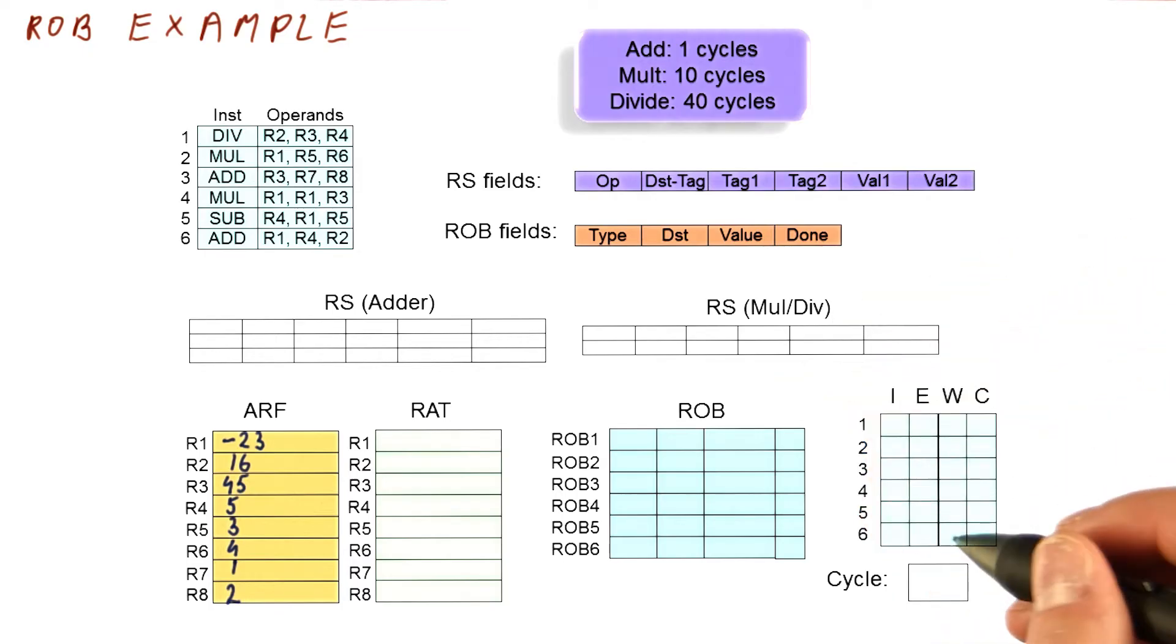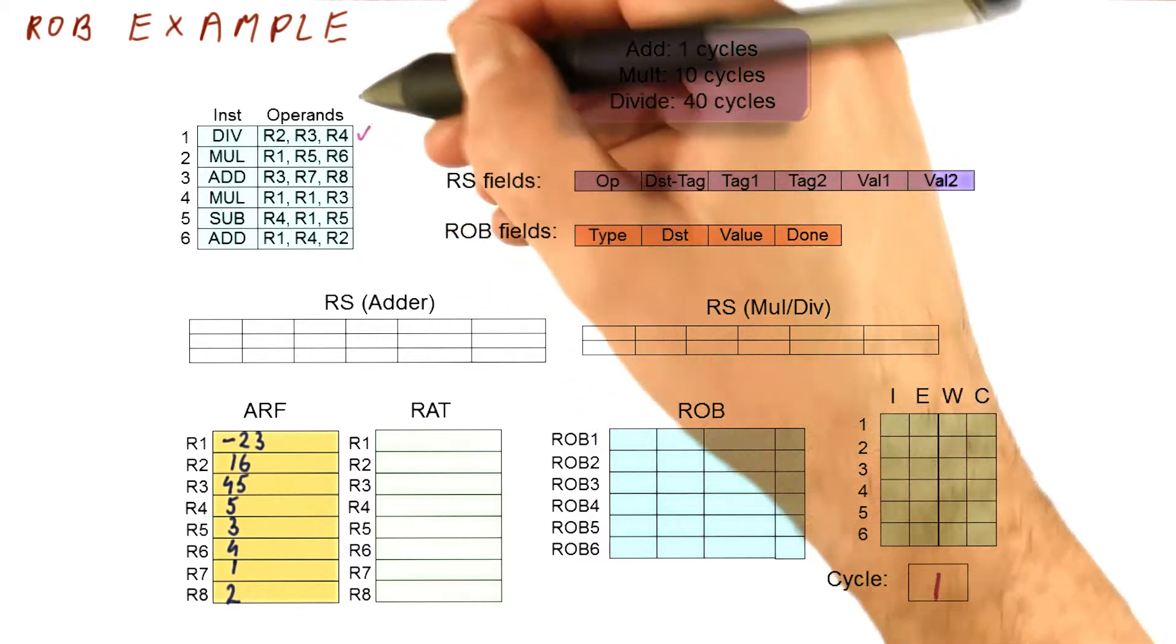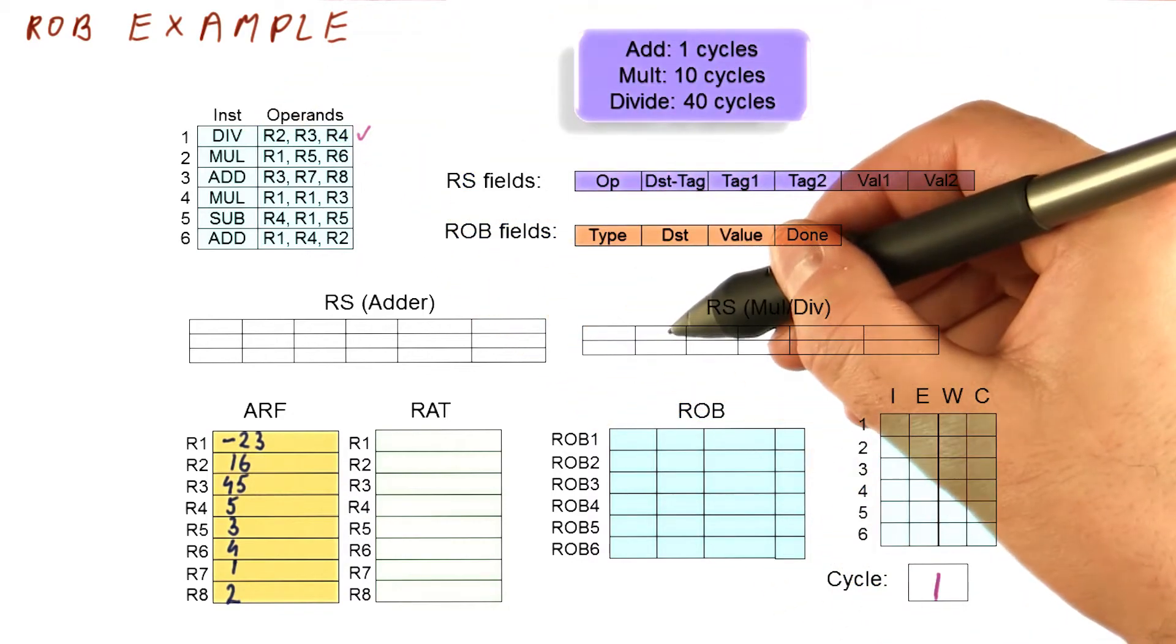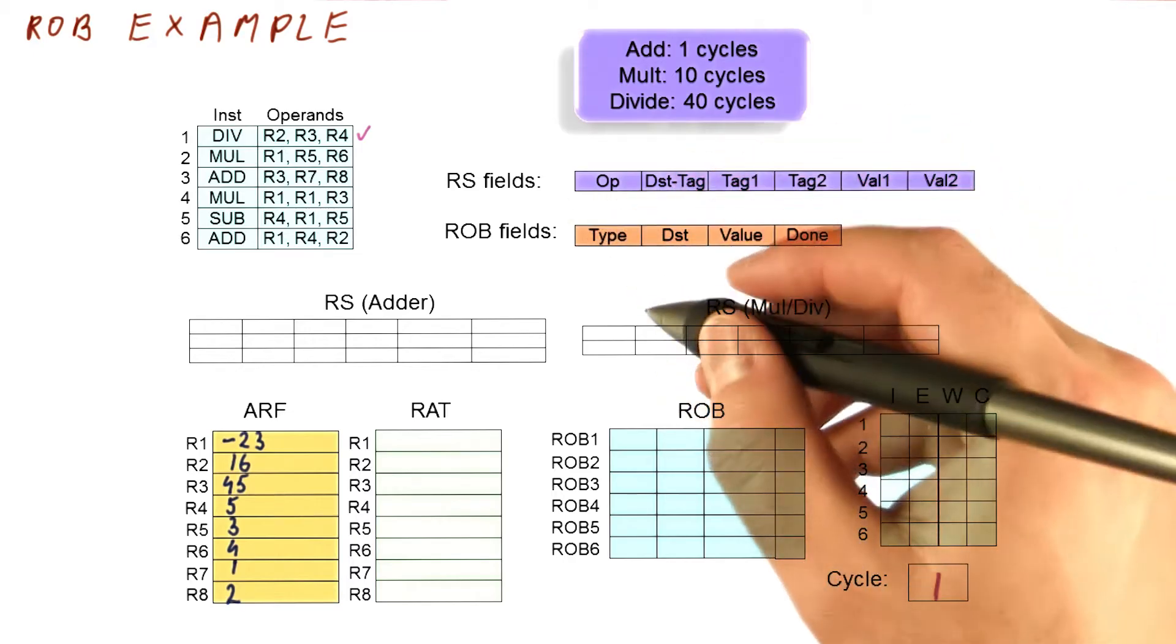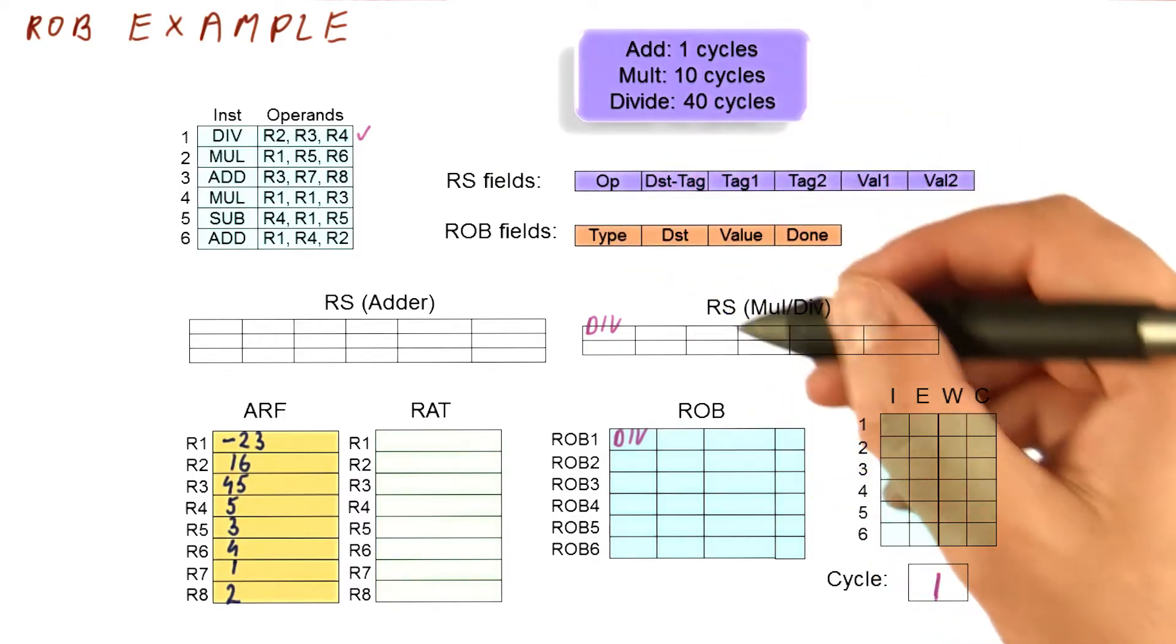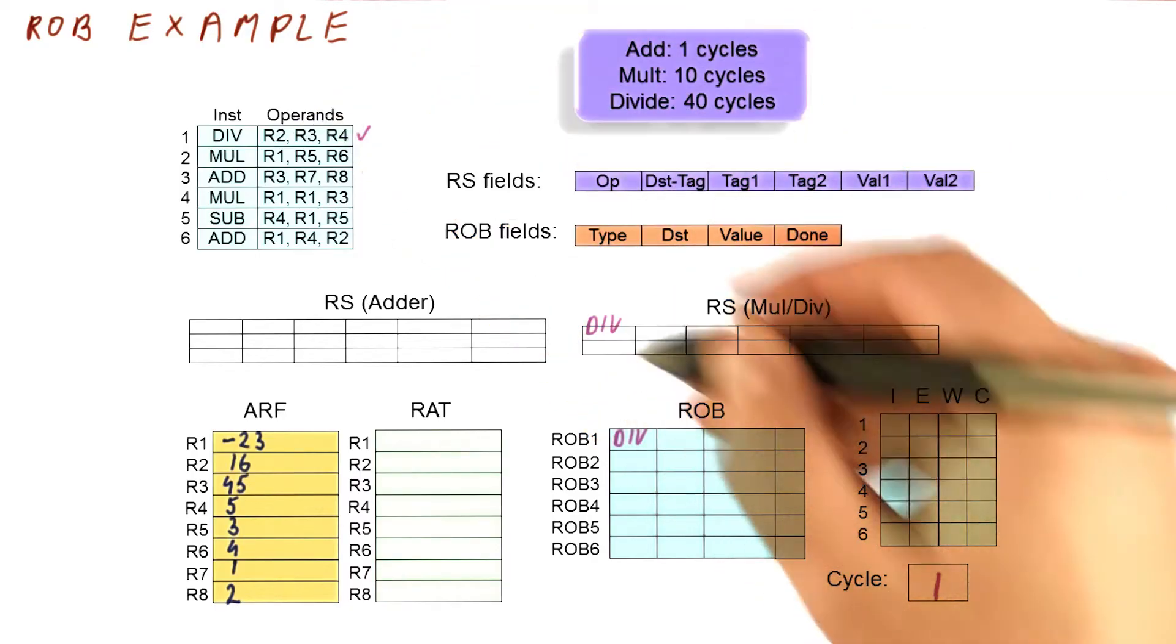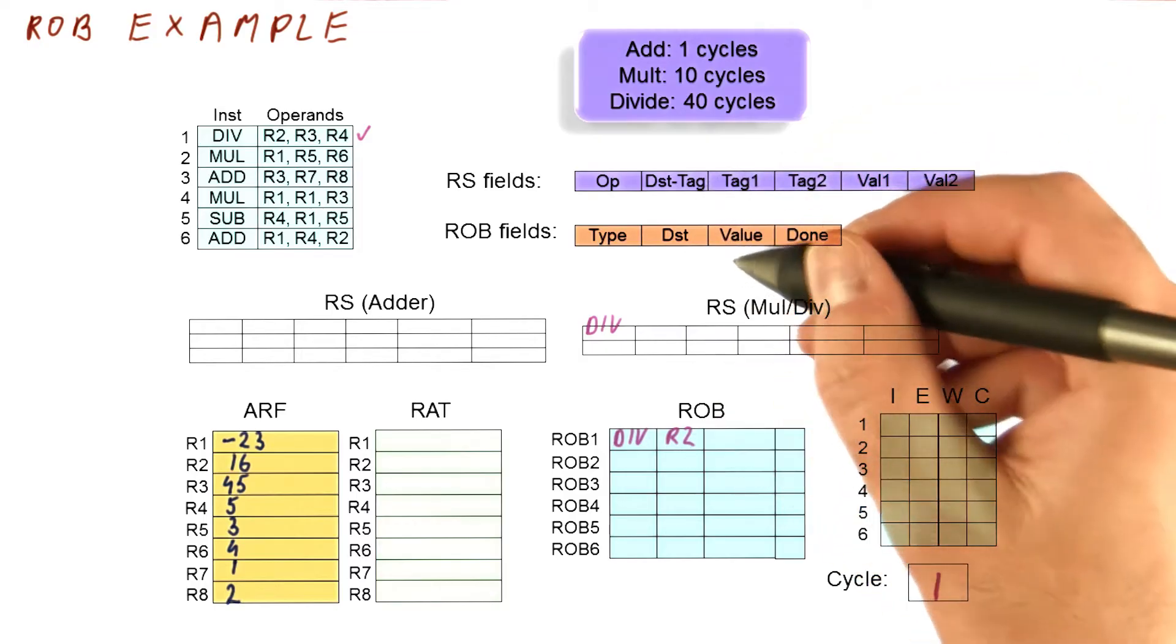So in cycle one, what's going to happen is we're going to try to issue this first instruction. To do that, we need an available reservation station and an available ROB entry. We have both, so we are ready to go. It's a divide, and we're going to write the divide's kind of operation here. It's writing to R2, so we're going to note that in the destination register over here.